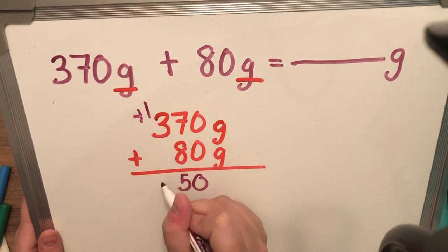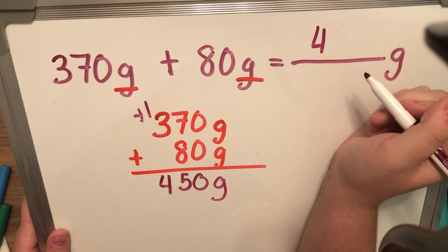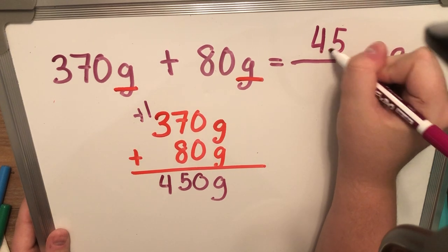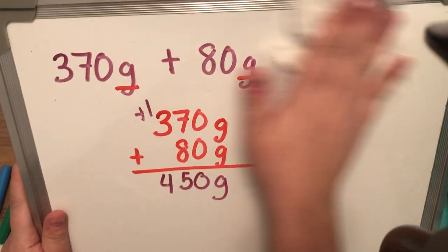So, 7 plus 8 is 15. Carry that one. Bring down your label. So, 370 grams plus 80 grams is going to give me 450 grams. Okay. And let's do, well, we'll just practice one, a little sneak preview of tomorrow.